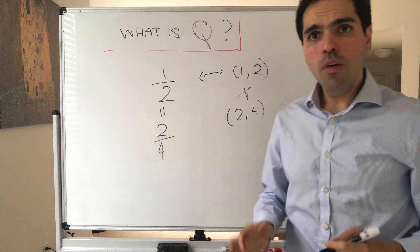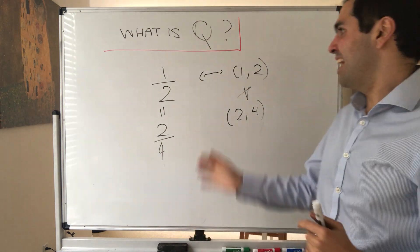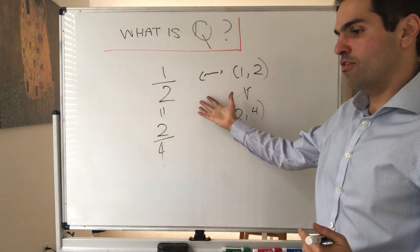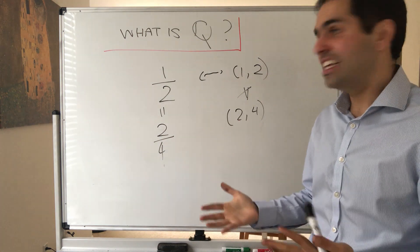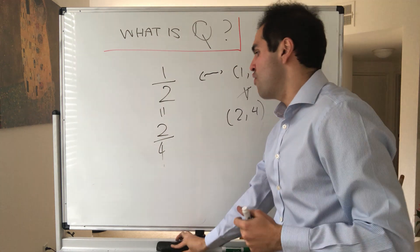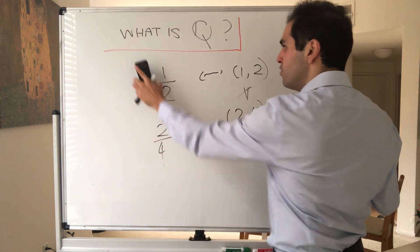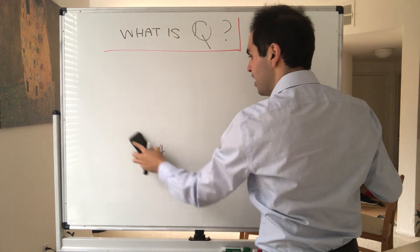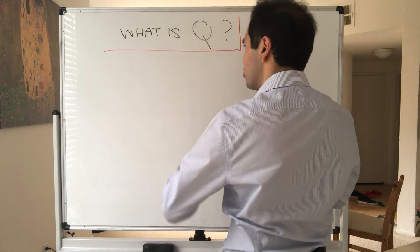So what we would like to say is that a fraction is a pair of numbers, but with an additional condition that, for instance, one half is two fourths. And how would we formulate this? Well, again, just using some simple algebra.